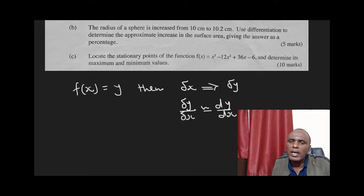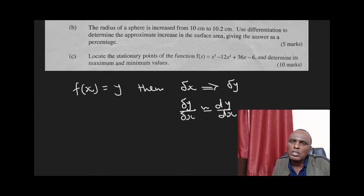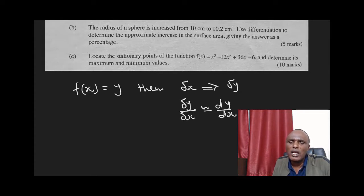In our question, the radius is given a small change from 10 cm to 10.2 cm. The small change is 0.2 cm. As the radius changes from 10 cm to 10.2 cm, this will result in a small change in the surface area. That small change in the surface area, divided by the small change in the radius, will be approximately dA over dr.